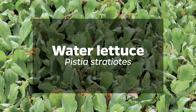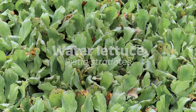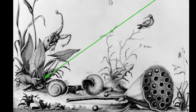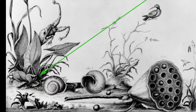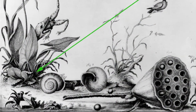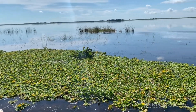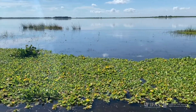Water lettuce, Pistia stratiotes. Experts disagree about whether water lettuce is a native plant or an introduced plant. Water lettuce occurs in tropical regions throughout the world.